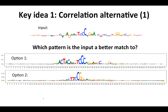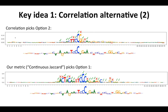I mentioned that we don't use correlation. Why is that? Consider the following example: here's an input seqlet, and here are two patterns. Just by eye, which pattern do you think the input is a better match to? If you use correlation, it will actually pick option 2, even though there's a pretty major discrepancy at the position of the G. But if you use the metric that we developed — which we're calling the continuous Jaccard similarity — it picks option 1, which is a better match. It agrees at more positions, and there's no major discrepancies.